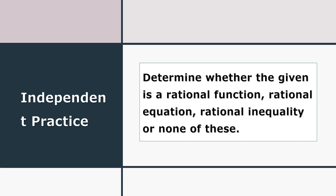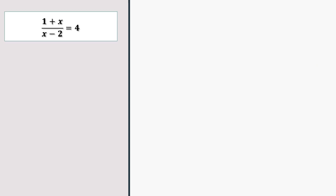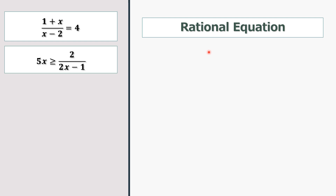Now for independent practice, determine whether the given is a rational function, rational equation, rational inequality, or none of these. First: (1 + x)/(x − 2) = 4. This is a rational equation. Next: 5x ≥ 2/(2x − 1). With the presence of the inequality symbol, this is a rational inequality.